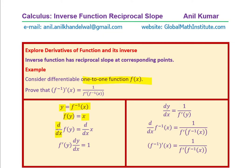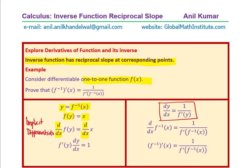If we take the derivative on both sides using implicit differentiation, we get: derivative of f(y) times dy/dx equals 1. From here, dy/dx equals 1 over the derivative of f(y). This is the most important relation — the derivative of the inverse function is 1 over the derivative of f(y). This confirms that the inverse function has a reciprocal slope at corresponding points.